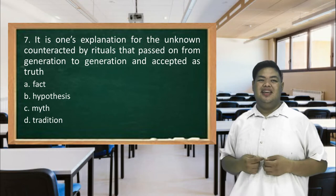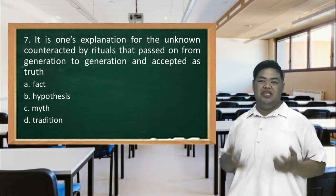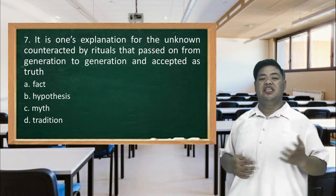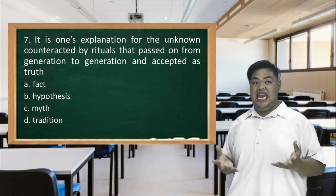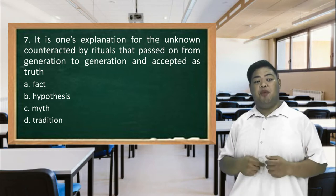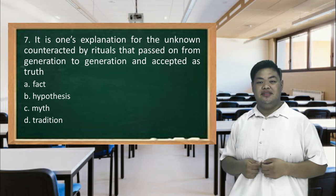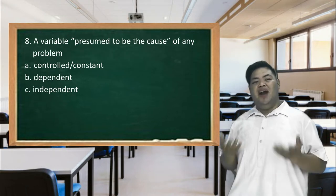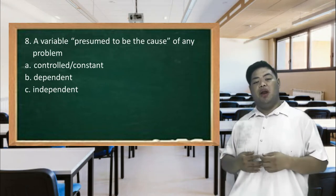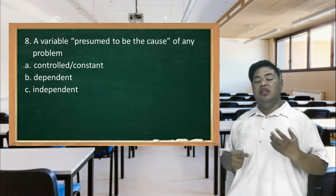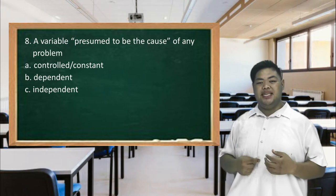Number 7. It is one's explanation for the unknown counteracted by rituals that pass on from generation to generation and accepted as truth. A. Fact. B. Hypothesis. C. Need. D. Tradition. Number 8. A variable presumed to be the cause of any problem. A. Controlled or constant. B. Dependent. C. Independent.